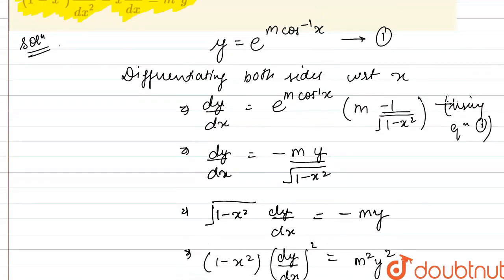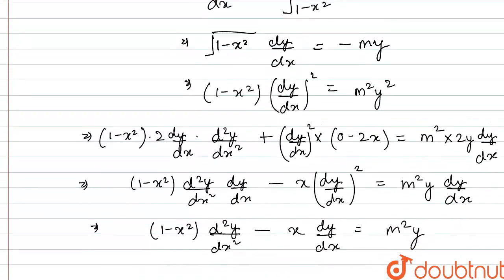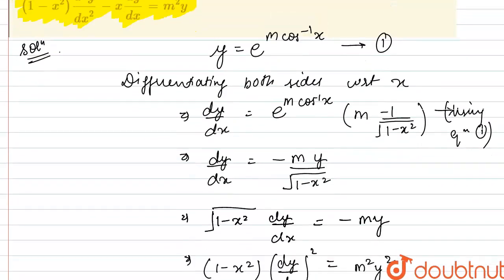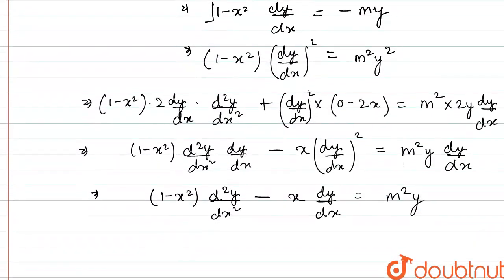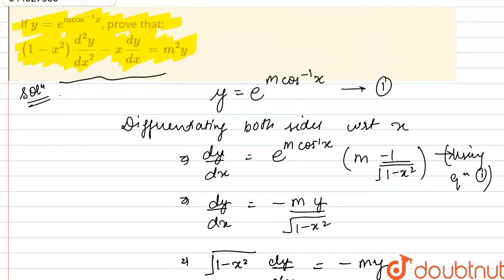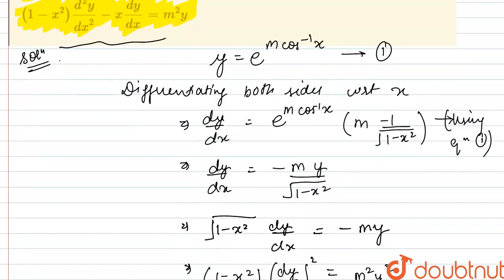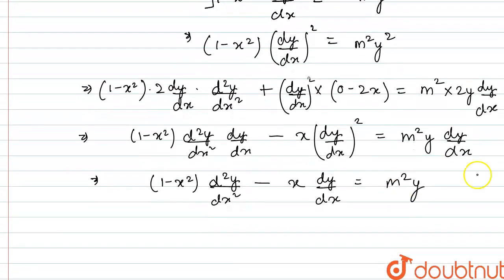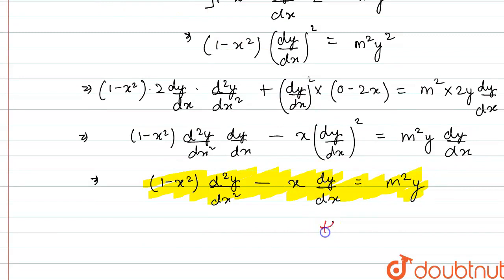And this is exactly what we needed to prove: (1 minus x²)·(d²y/dx²) minus x·(dy/dx) equals m²·y. Hence proved.